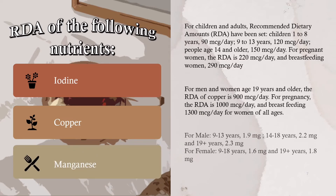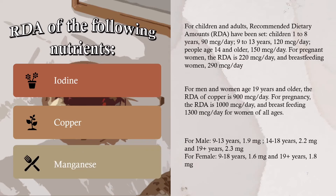Manganese: For males — 9 to 13 years: 1.9 milligrams; 14 to 18 years: 2.2 milligrams; 19 plus years: 2.3 milligrams. For females — 9 to 18 years: 1.6 milligrams; 19 plus years: 1.8 milligrams.